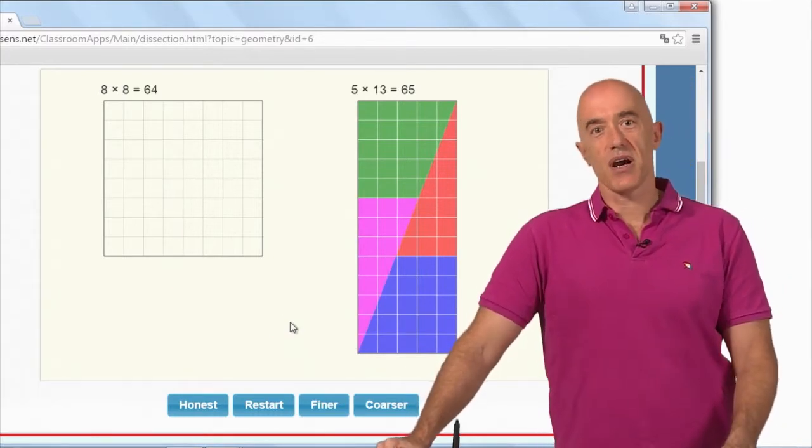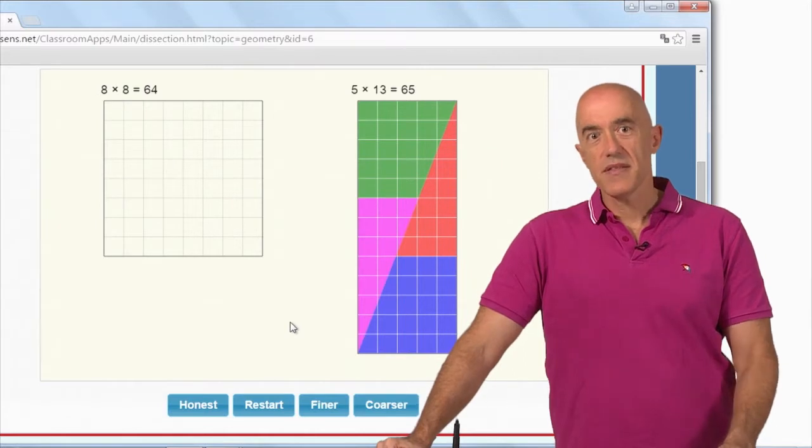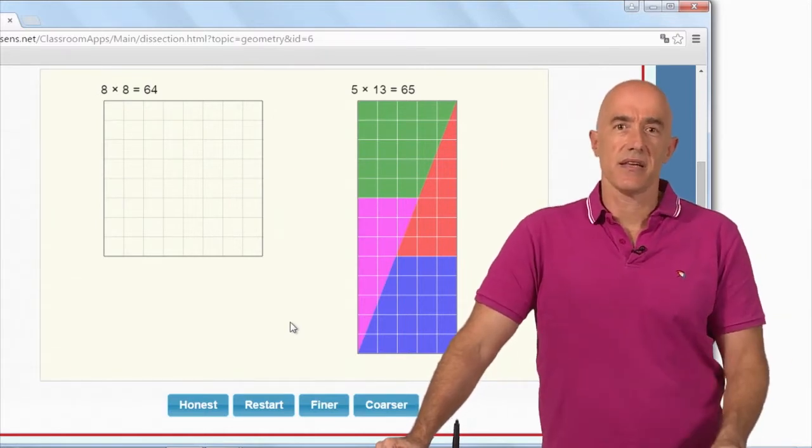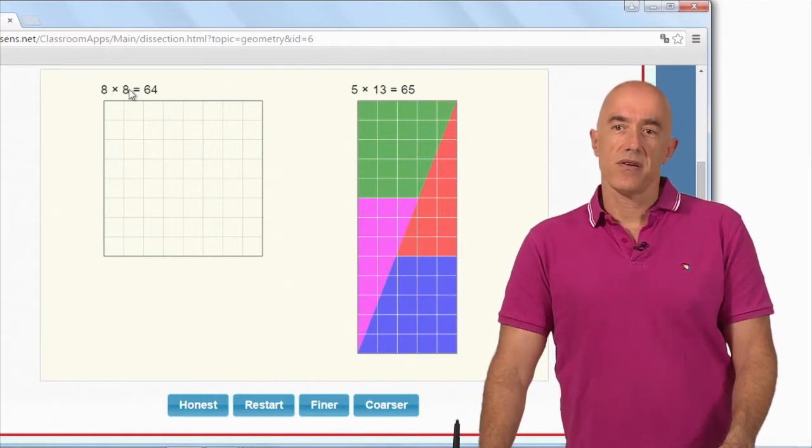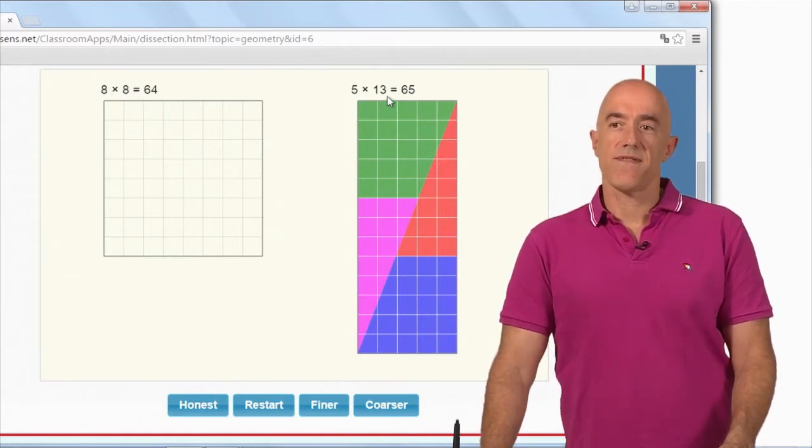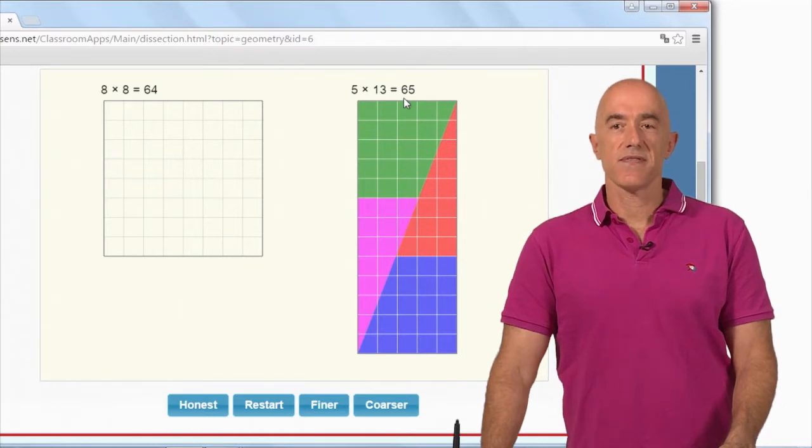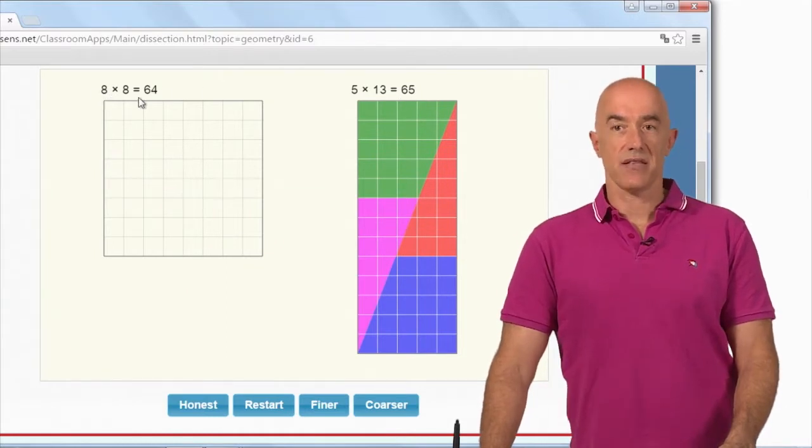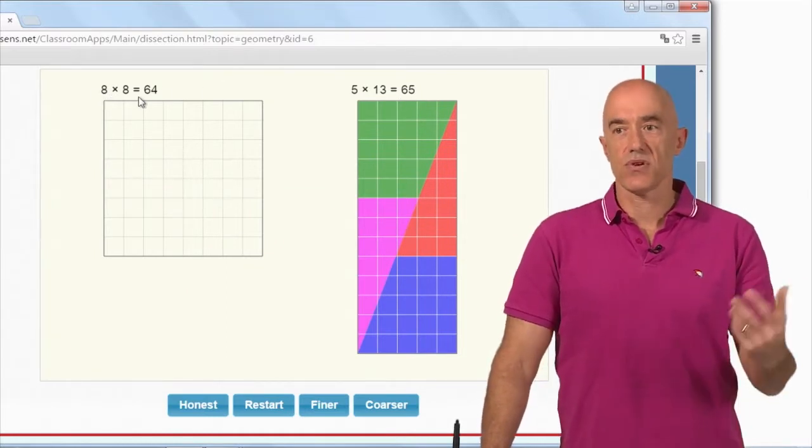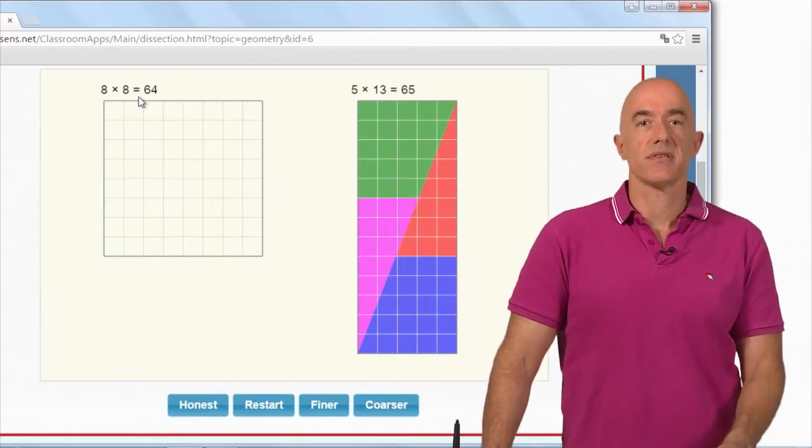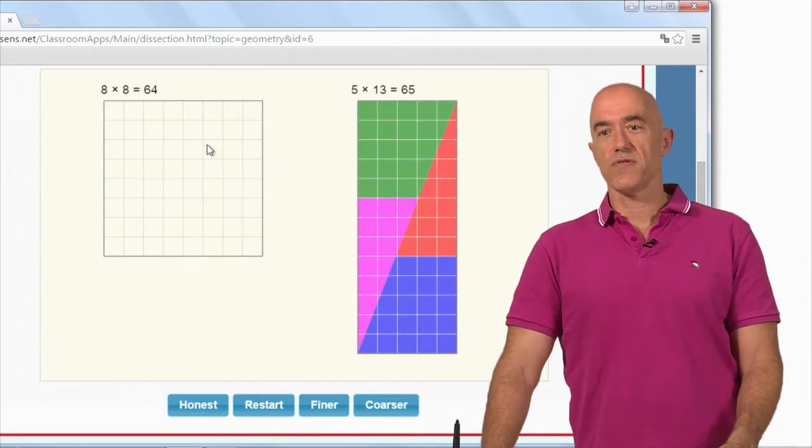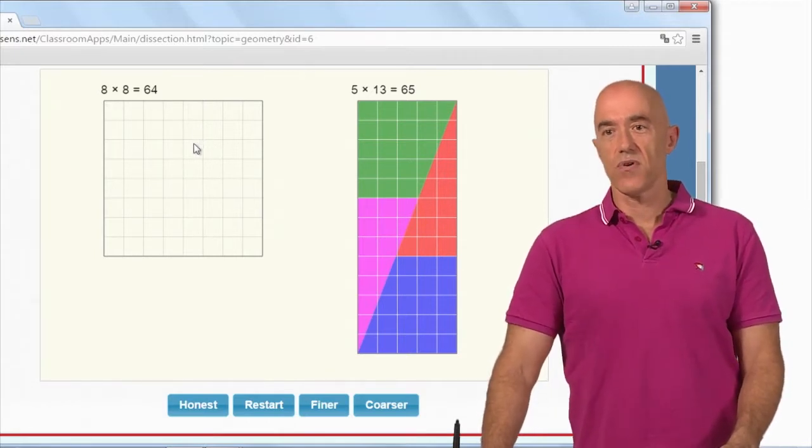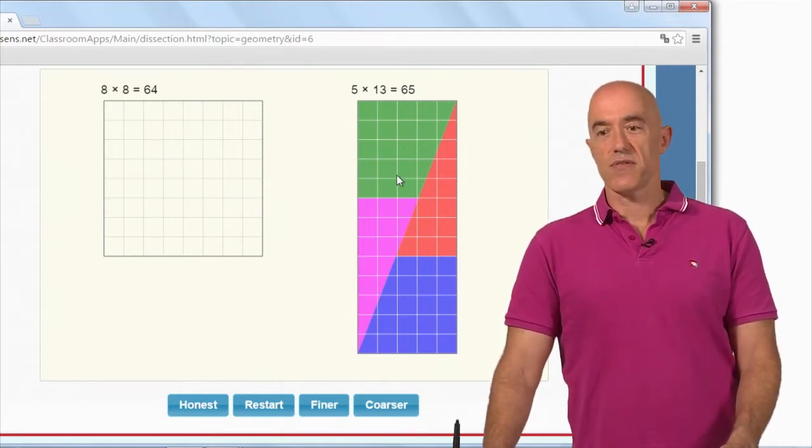So what is going on here? This is Cassini's identity. So this is the difference: 8 squared, or let's say 5 times 13, 65 minus 8 squared is equal to 1. This is Cassini's identity. So how did we manage to fit an area of 64 into an area of 65?